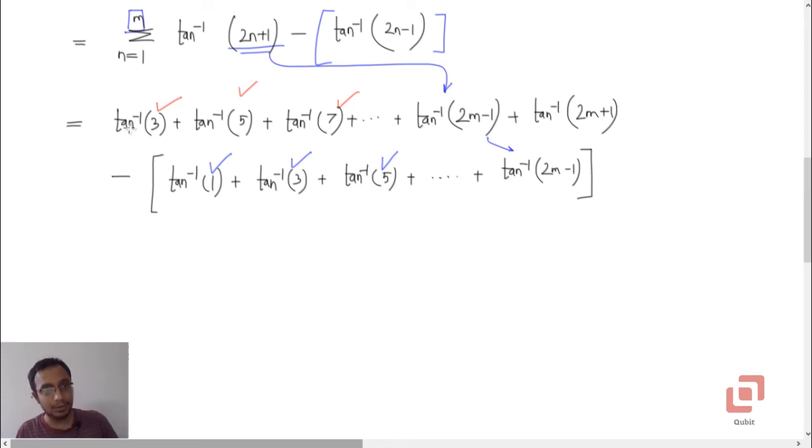So the first series is going to have one additional term, and that is tan inverse of 2m plus 1. And I'm telling you this because all the remaining terms will get cancelled, except the two terms out of which the first term is this one and the second term is this tan inverse of 1. Everything else will go.